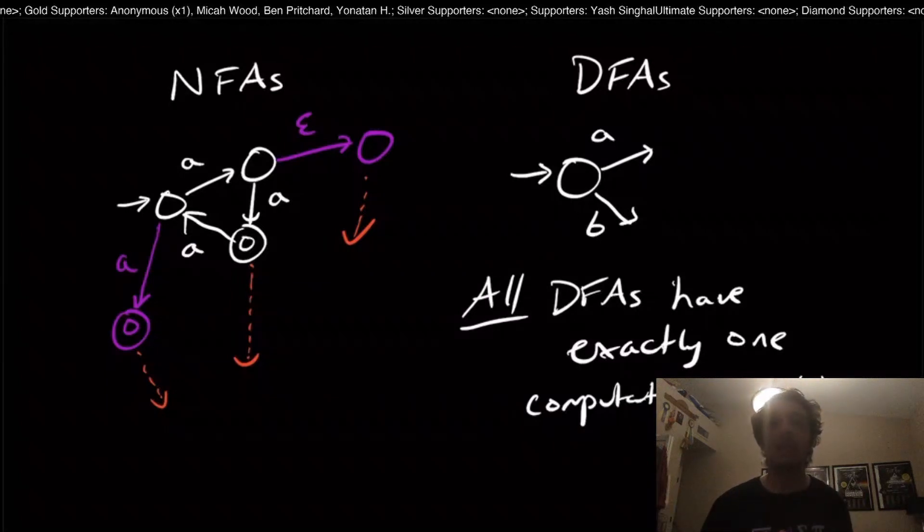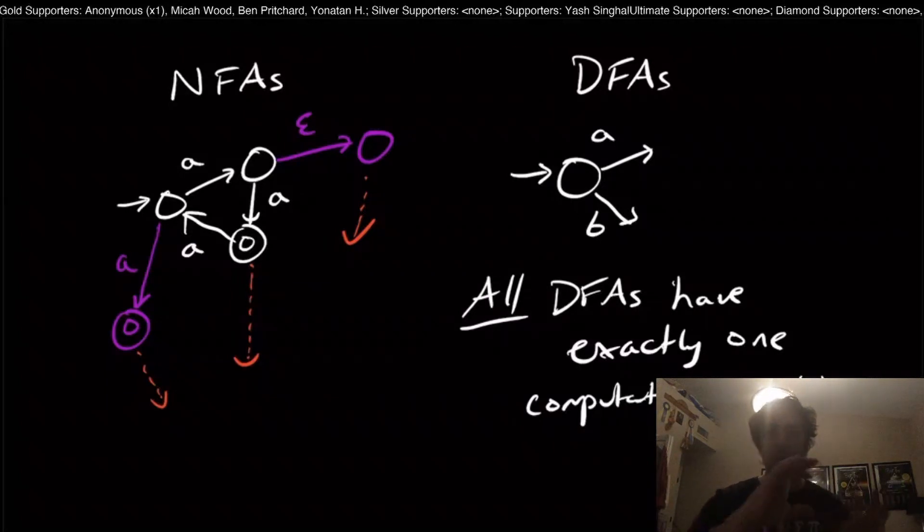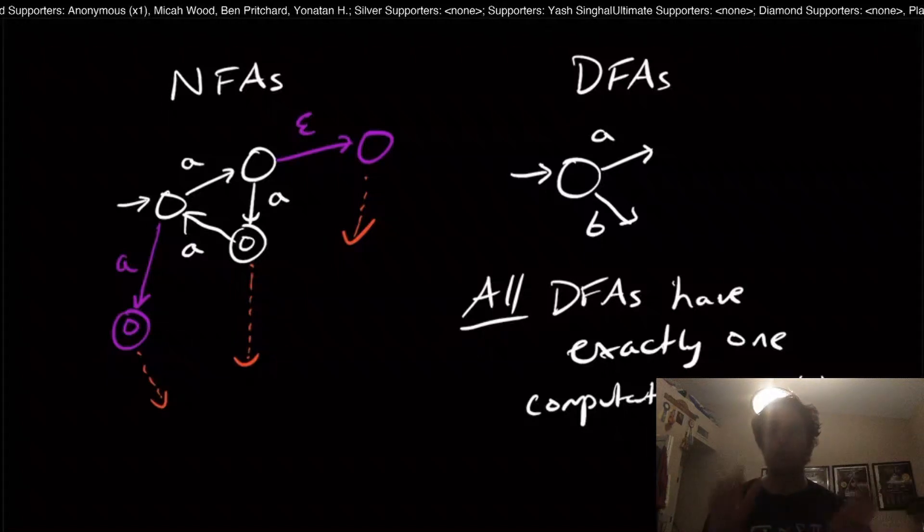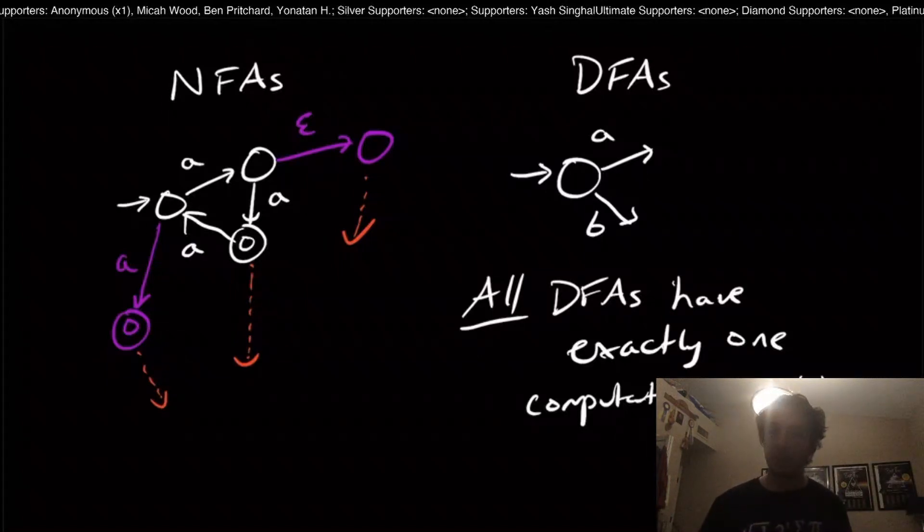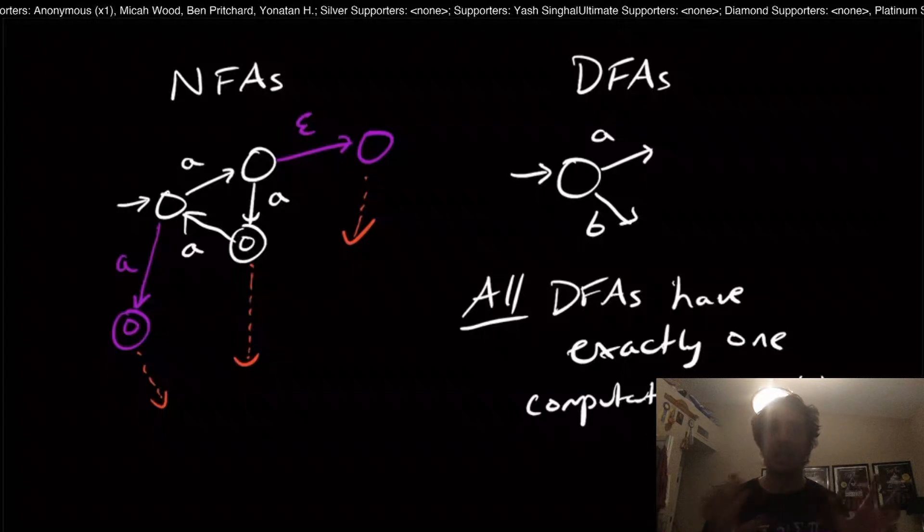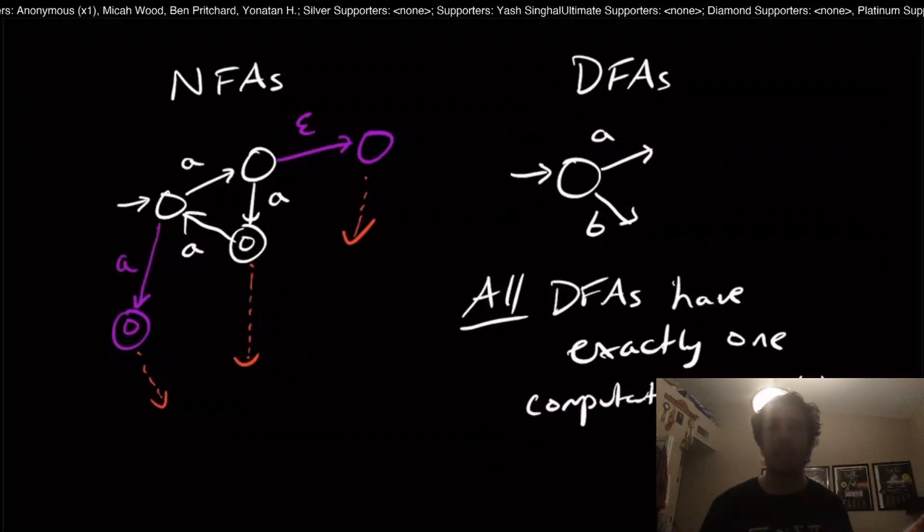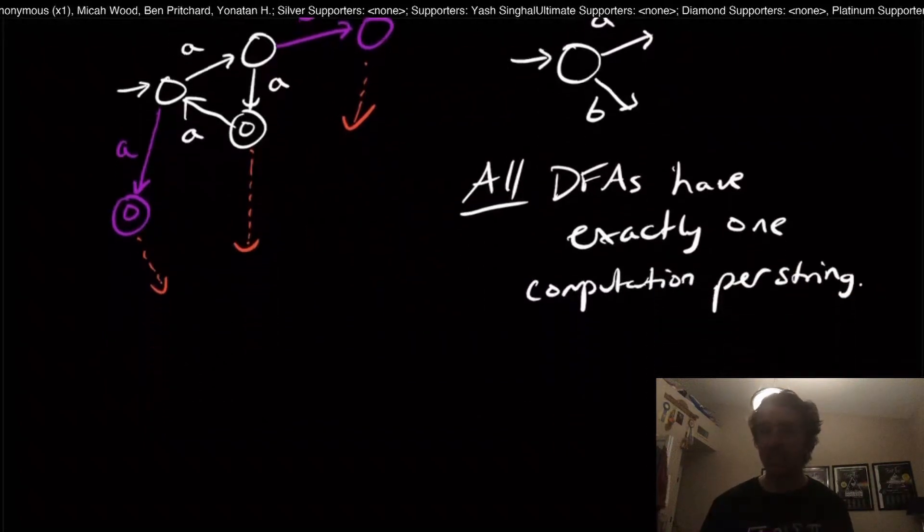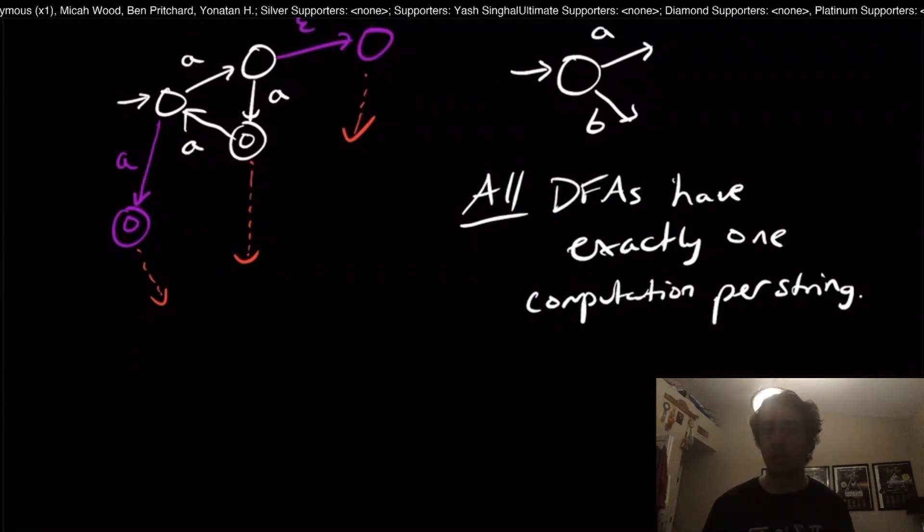That's what allowed us to get closure on the complement. If we flipped which state was final and which one was not, we get the complement language because every DFA has exactly one computation per string.